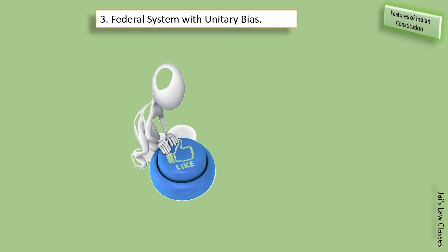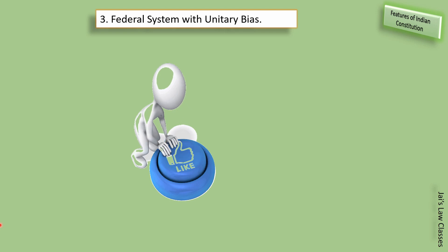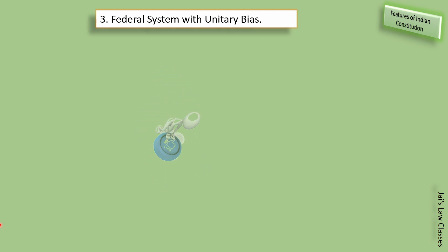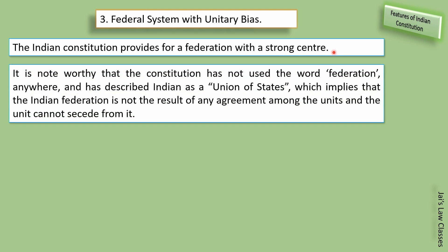Third point: federal system with unitary bias. Indian constitution federal toh hai lekin uska jhukav unitary ki taraf zyada hai. The Indian Constitution provides for a federation with a strong center. There are different states, sometimes with different governments, but with a strong center — meaning supreme power rests with the center. When there is a conflict, the central government will prevail.